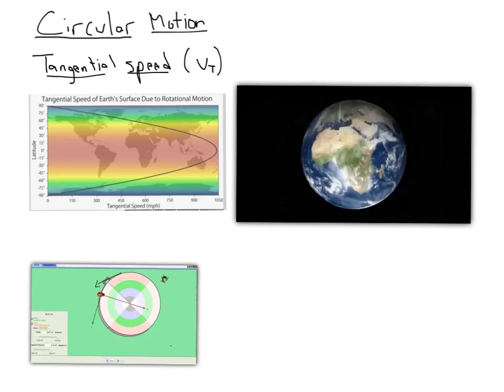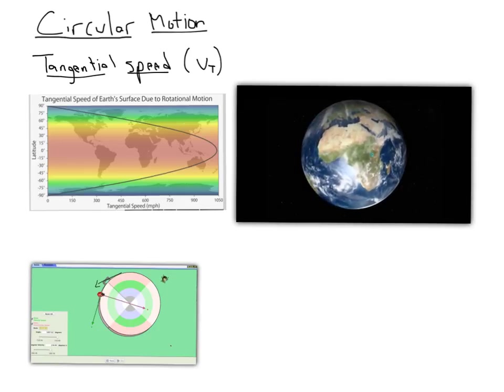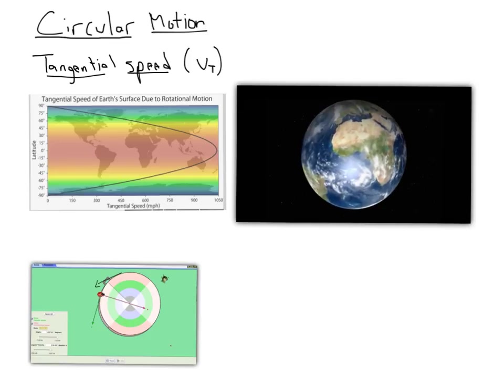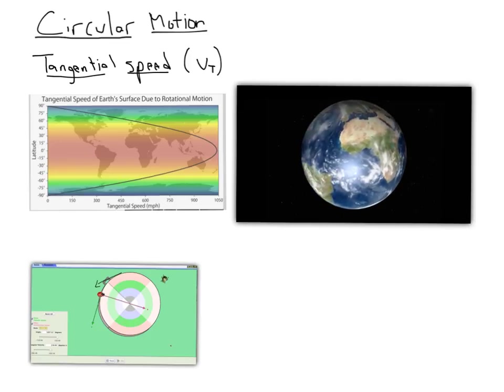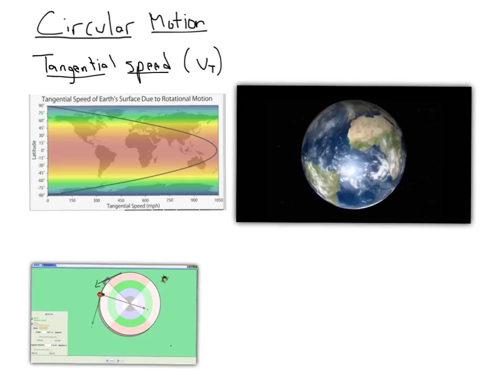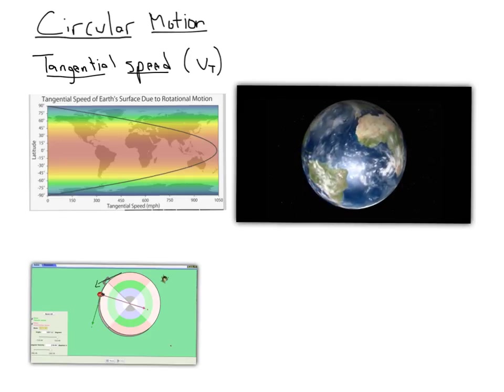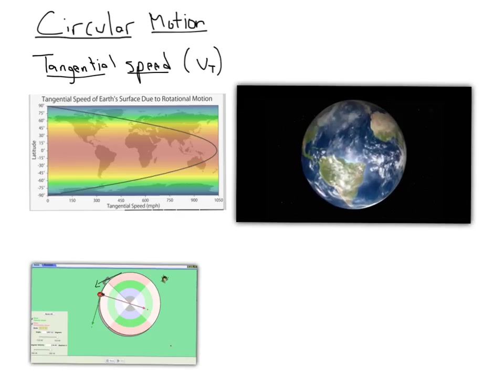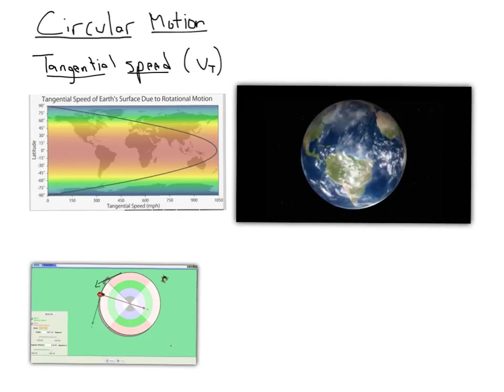So this has an interesting implication. Here we have a video of the rotating Earth. So here's the Earth as it spins, and if you think of the Earth, it's a circle, but it's a three-dimensional circle, so it's a sphere. But the Earth is the fattest, or the circle is the biggest at the equator, and then the circle gets smaller and smaller and smaller until you get to the North Pole.